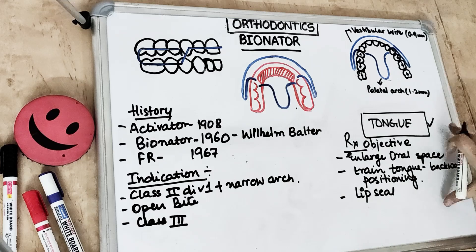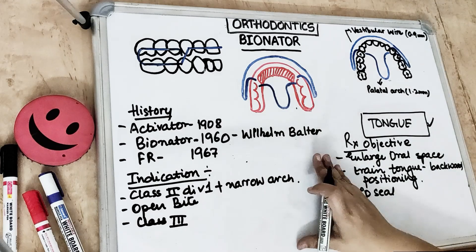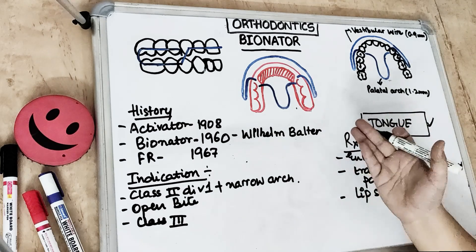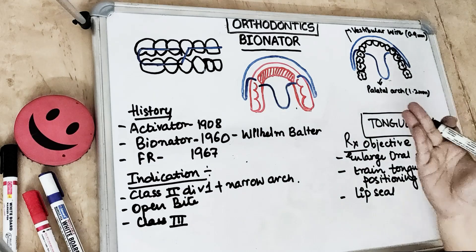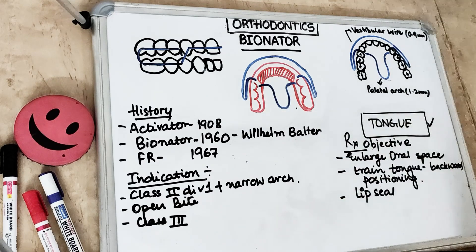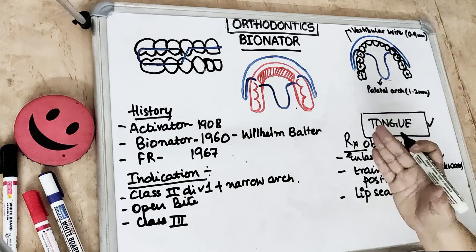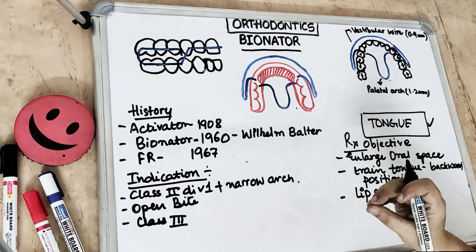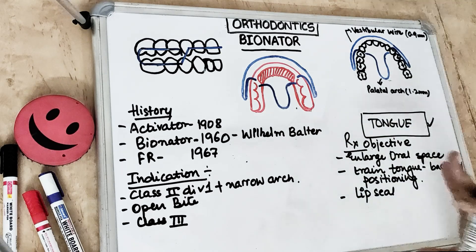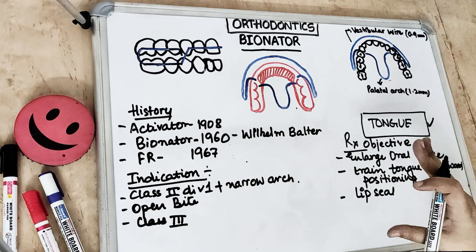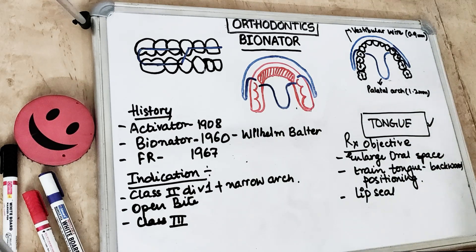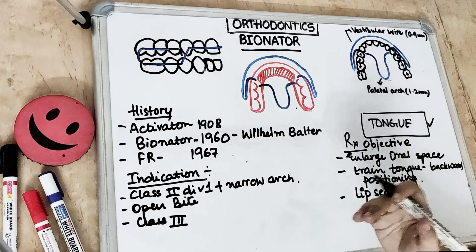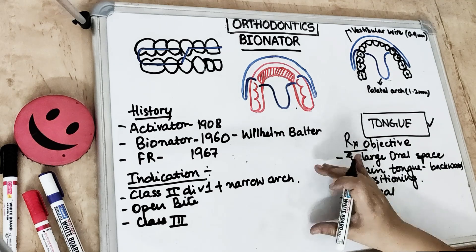The main advantage of the Bionator is that it is less bulky than the activator. Because of this, it can be worn both during the daytime and at night, and its action is faster than the activator since unfavorable forces are avoided for a long time with constant wear, allowing more rapid adjustment of the musculature. Disadvantages include that it is difficult to manage, difficult to stabilize, and selective grinding is difficult.